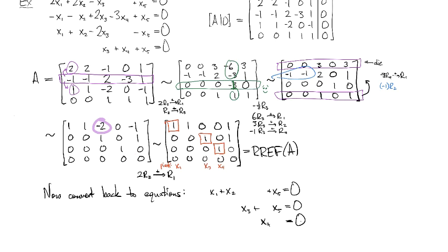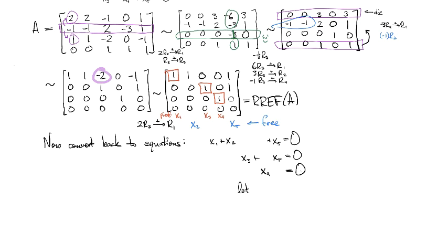So our pivots are x1, x3, and x4. And so then that means that x2 and x5 are going to be free. So let's give them their equations. So we're going to say let x2 be s and let x5 be t. So then I can solve these initial equations in terms of s and t. And they're going to become x1 = -s - t, x3 = -t. And I guess x4 is still 0.